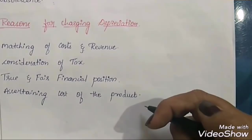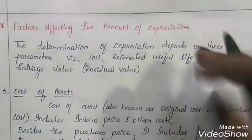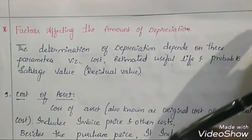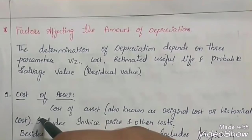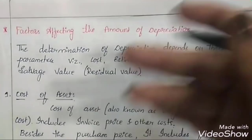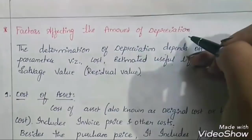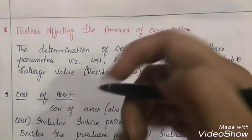Now let's discuss the factors affecting the amount of depreciation. When we know we have to charge depreciation on an asset, we cannot randomly decide the amount. There are certain factors which affect the amount of depreciation. The determination of depreciation depends on three parameters: cost of asset, estimated useful life, and probable salvage value.